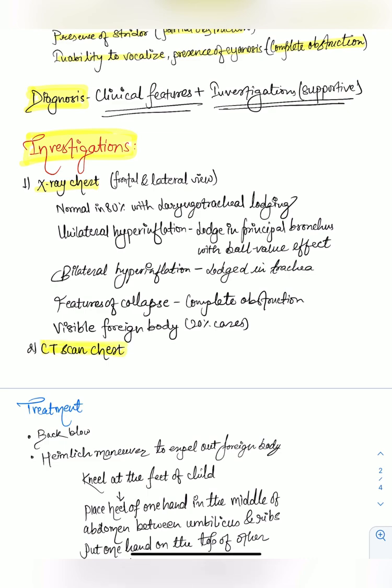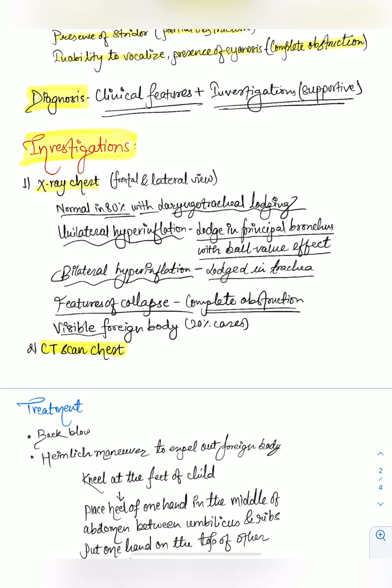In x-ray of the chest, it is normal in 80% of cases with laryngotracheal lodging. There may be unilateral hyperinflation if the foreign body is lodged in the principal bronchus with ball-valve effect. Bilateral hyperinflation can occur if the foreign body is lodged in the trachea. There may be signs of collapse when it causes complete obstruction. The foreign body is visible in 24% of cases.